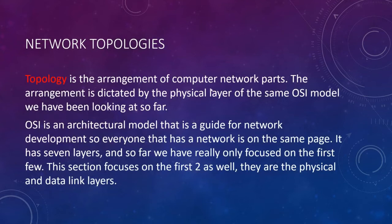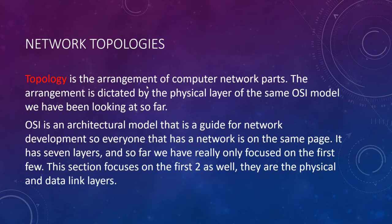Topology is the arrangement of computer network parts — how it's put together. The arrangement is dictated by the physical layer. We're going to be referring to the OSI model quite a bit — at least a couple of layers in this lecture. Topology is a physical thing: how you lay it out, where the pieces are, what the pieces are. That is carried or mandated in the physical layer of the OSI model.